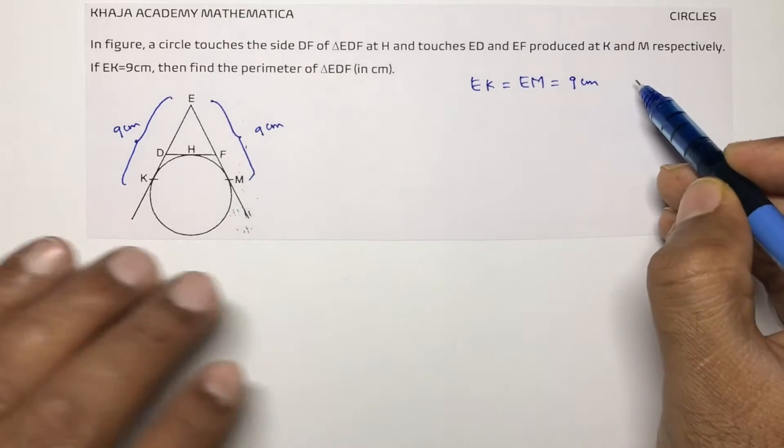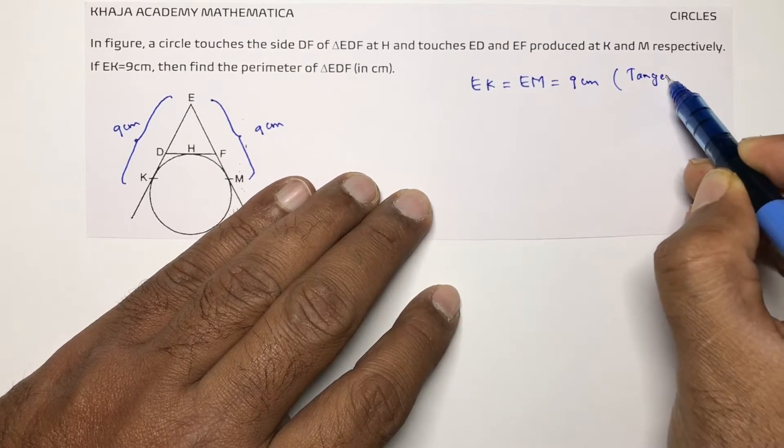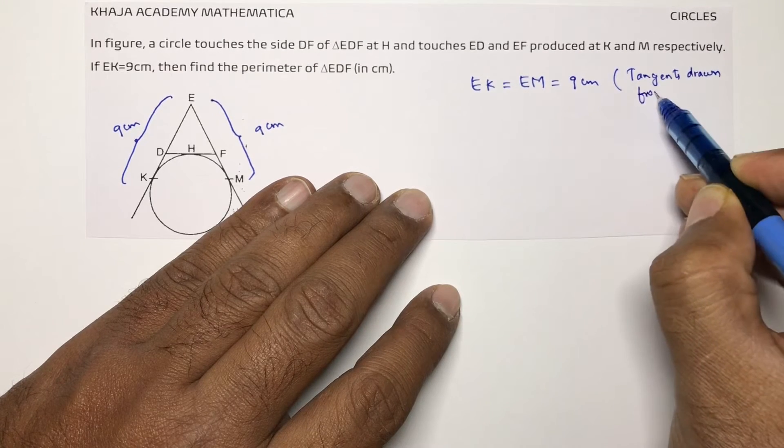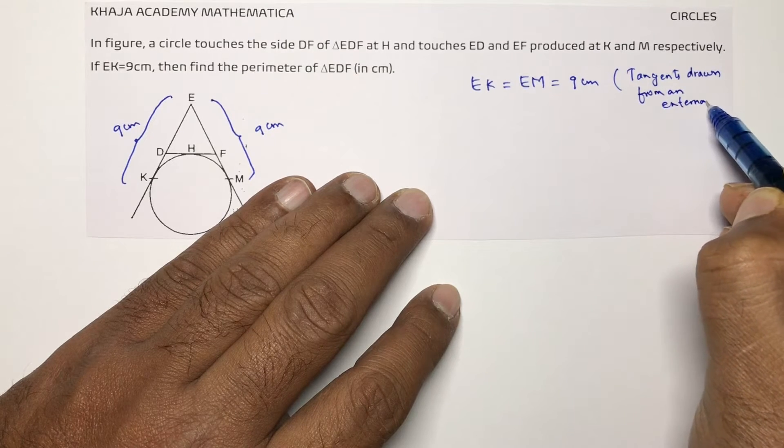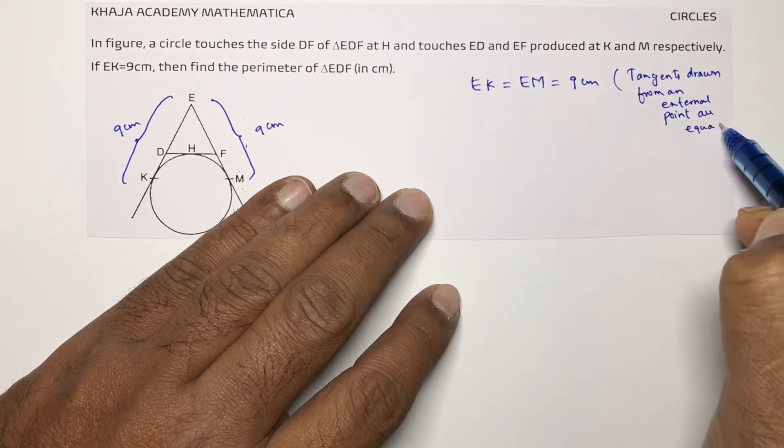The reason is tangents drawn from an external point are equal. The length of the tangents drawn from an external point are equal.